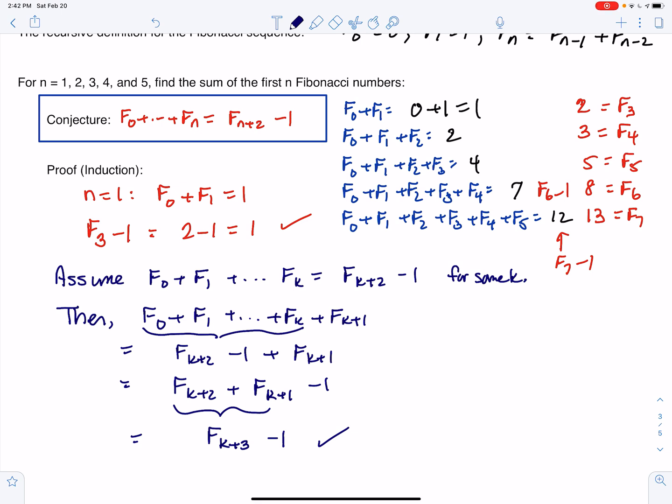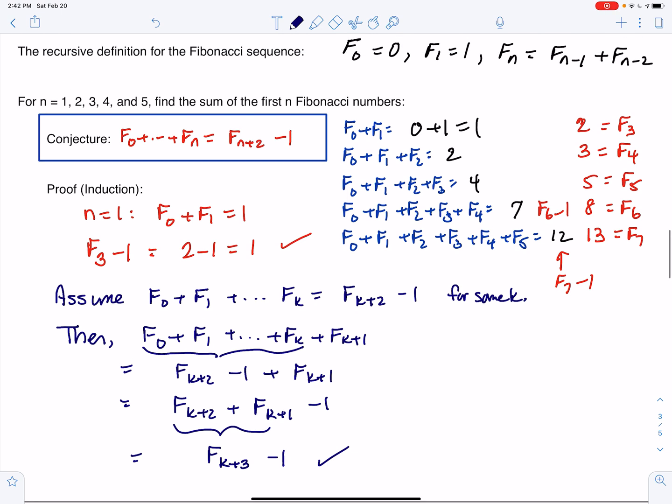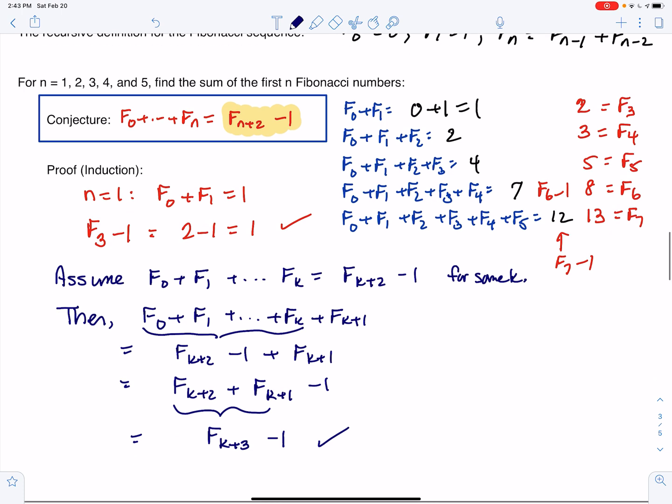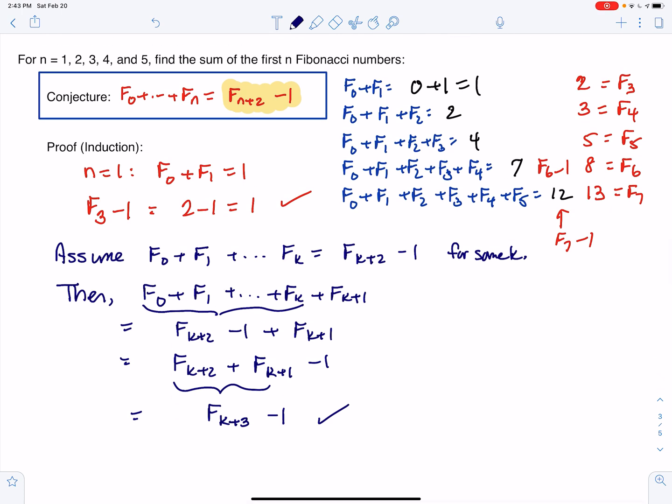And that proves the theorem because with induction, we're trying to get to the next step here. So we want to basically replace n with n plus 1, which gets us n plus 3 on the right-hand side. That proves our theorem. So that means the sum of the first n Fibonacci numbers is go up two spots for that next Fibonacci number and then subtract 1. And that's your formula. So there we have it.